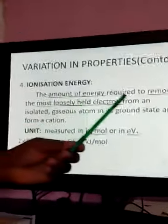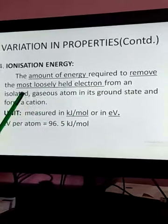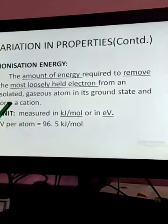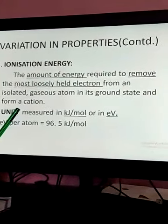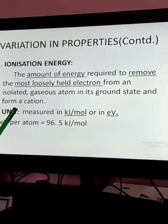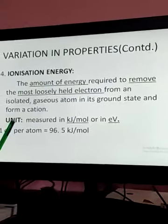The amount of energy required to remove the most loosely held electron from an isolated gaseous atom in its ground state and form a cation. Cation means positively charged ion. A neutral atom, by losing electron, it forms a cation.